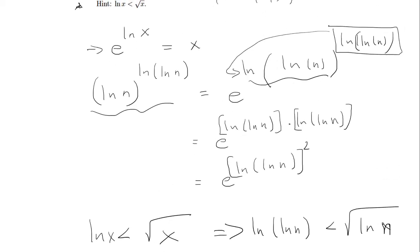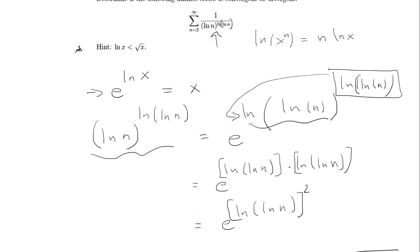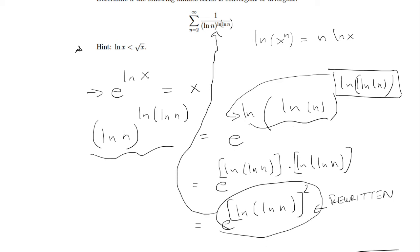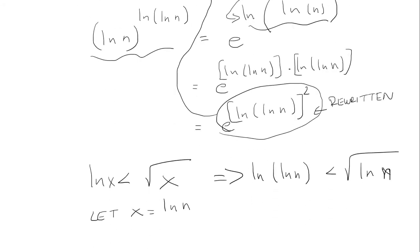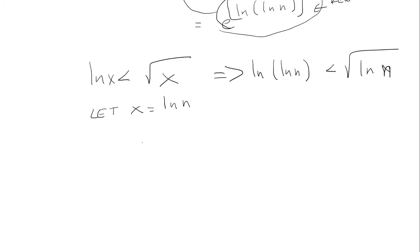Going back to the original problem, we found that ln of n to the ln of ln of n can be rewritten as e to the ln of ln of n squared. We're going to plug this in for the denominator, giving us 1 over e to the ln of ln of n, whole thing squared.